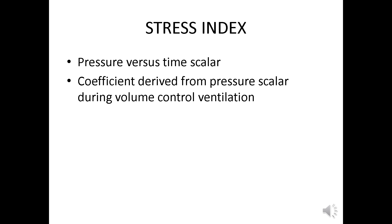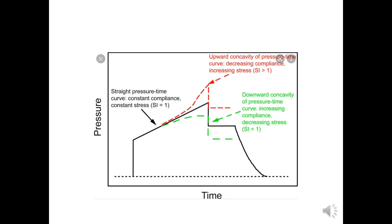Next is the entity of stress index, commonly depicted in the pressure-time scalar. It is a coefficient derived from the pressure scalar during volume control ventilation and is of much use in ARDS ventilation. In the pressure-time graph, the straight black line depicts a normal pattern with constant compliance and constant stress, giving a stress index equal to 1.